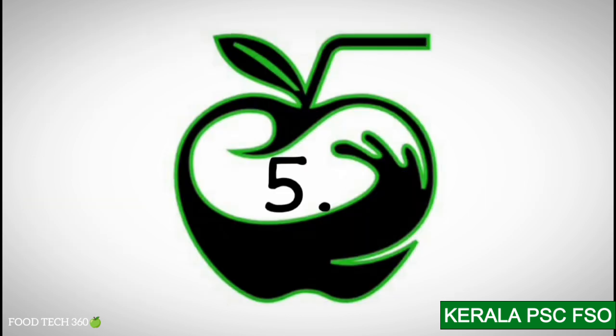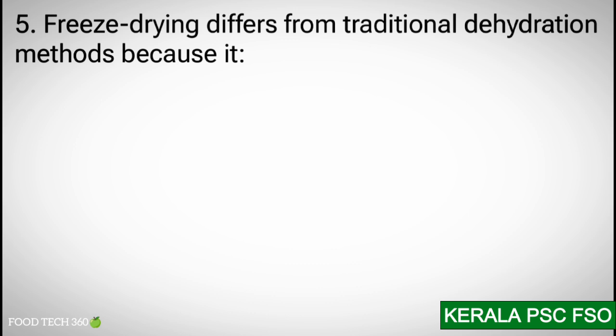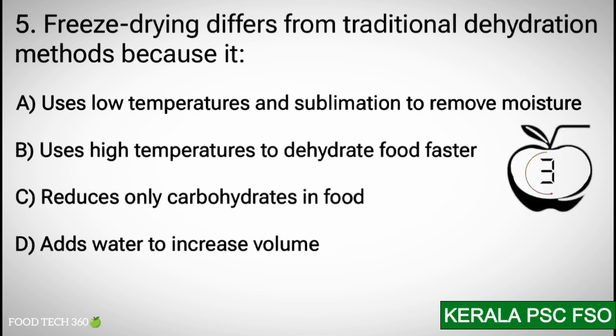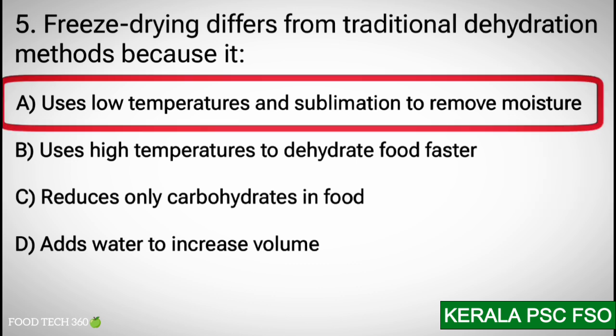Q5: Freeze drying differs from traditional dehydration methods because it — Options: A. Uses low temperature and sublimation to remove moisture. B. Uses high temperature to dehydrate food faster. C. Reduces only carbohydrates in food. D. Adds water to increase volume. Correct answer: A. Uses low temperatures and sublimation to remove moisture.